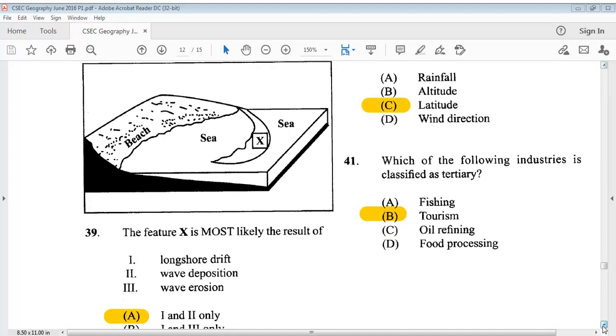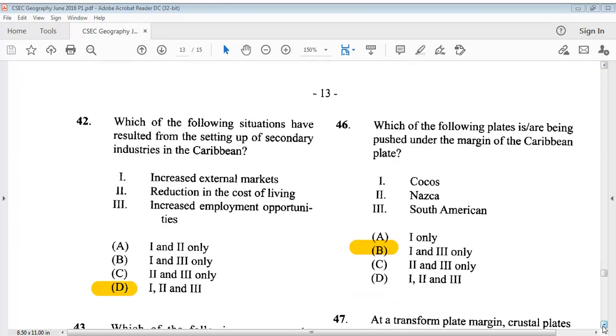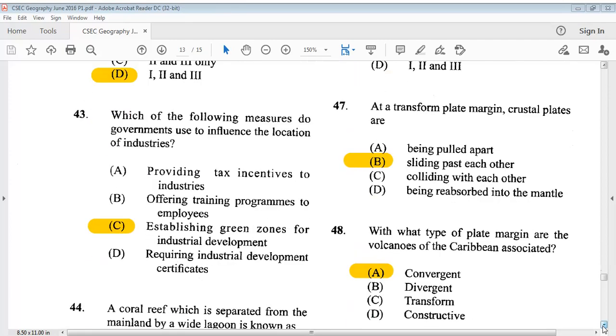Question 41: Which of the following industries is classified as tertiary? The answer is B, tourism. Question 42 says, which of the following situations have resulted from the setting up of secondary industries in the Caribbean? 1, increased external markets. 2, reduction in the cost of living. 3, increased employment opportunities. The answer is D, 1, 2 and 3. Question 43 says, which of the following measures do governments use to influence the location of industries? The answer is C, establishing green zones for industrial development.